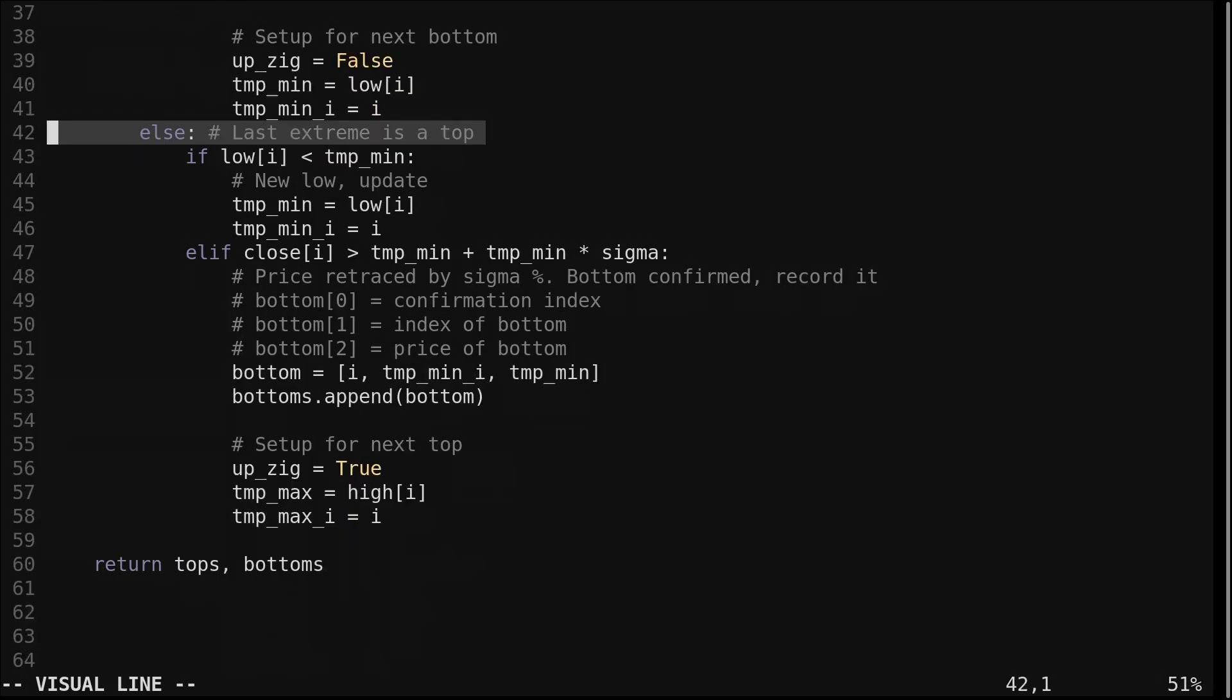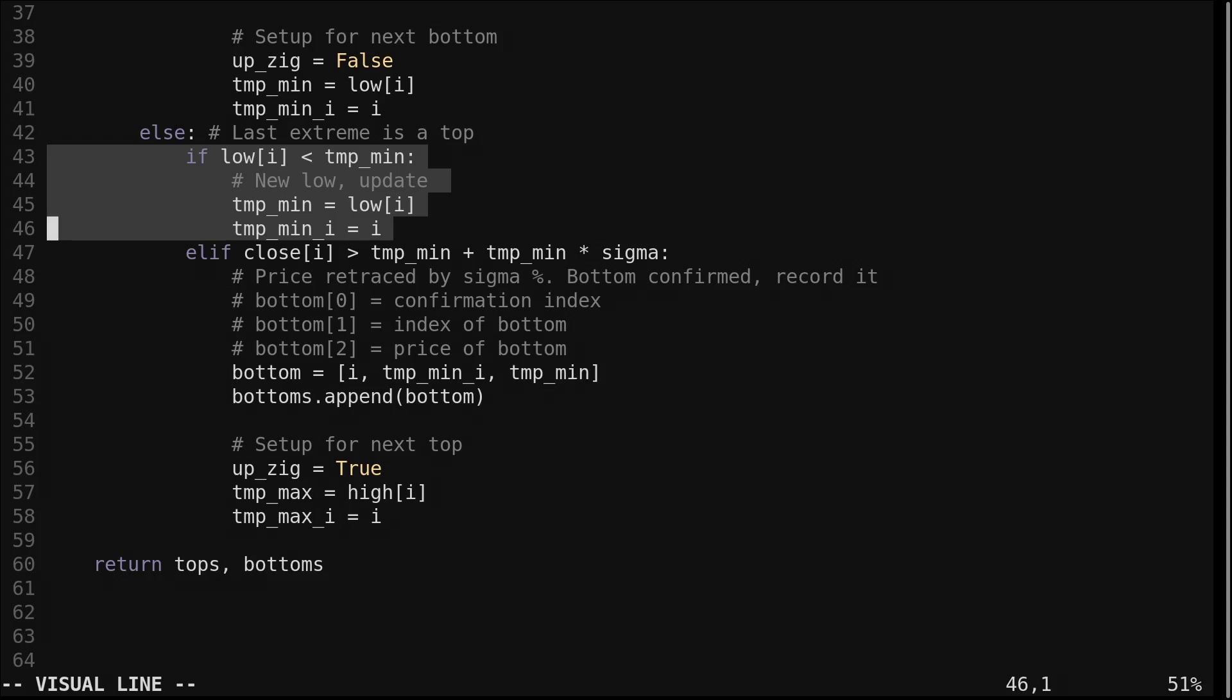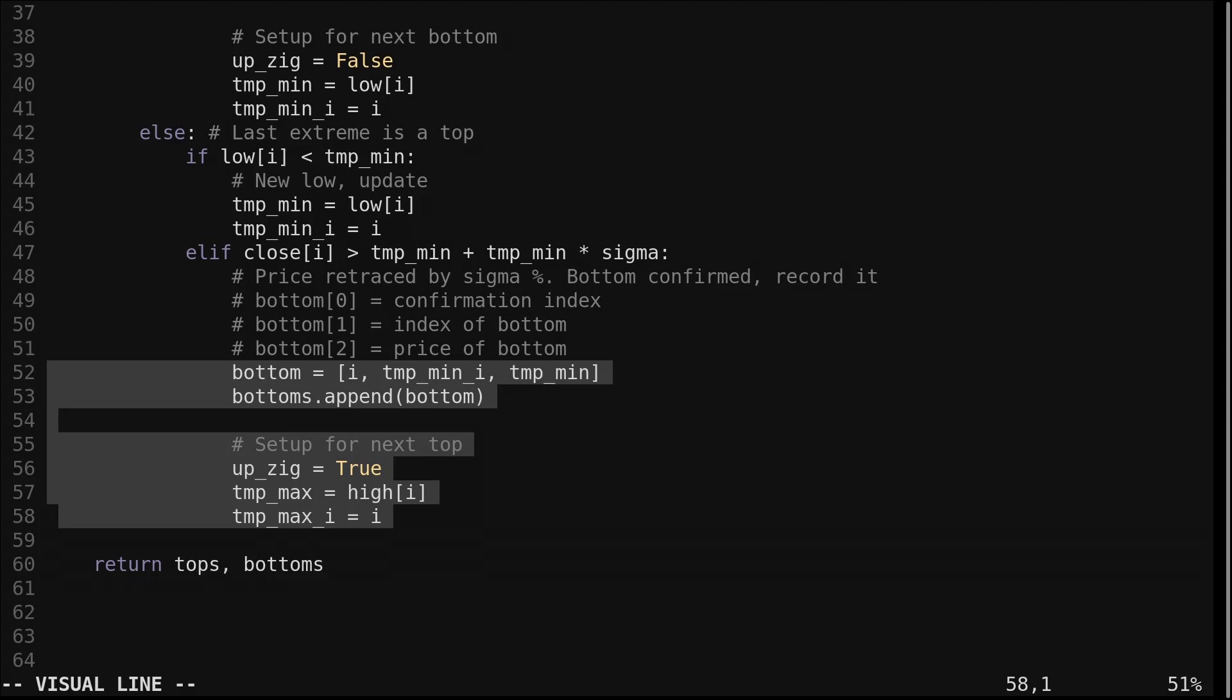If the last confirmed extreme was a top, we do everything opposite. We check for a lower low and update our pending bottom. Otherwise we check if a retracement has occurred. If it has, we record our confirmed bottom and set up for the next top.